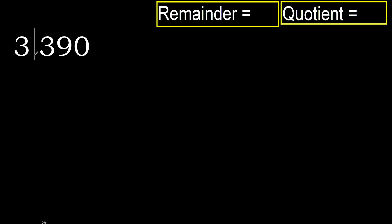390 divided by 3. 3 is not — let's start therefore with 3. Here, 3 multiplied by which number is nearest to 3 but not greater? 3 multiplied by 2 is 6.